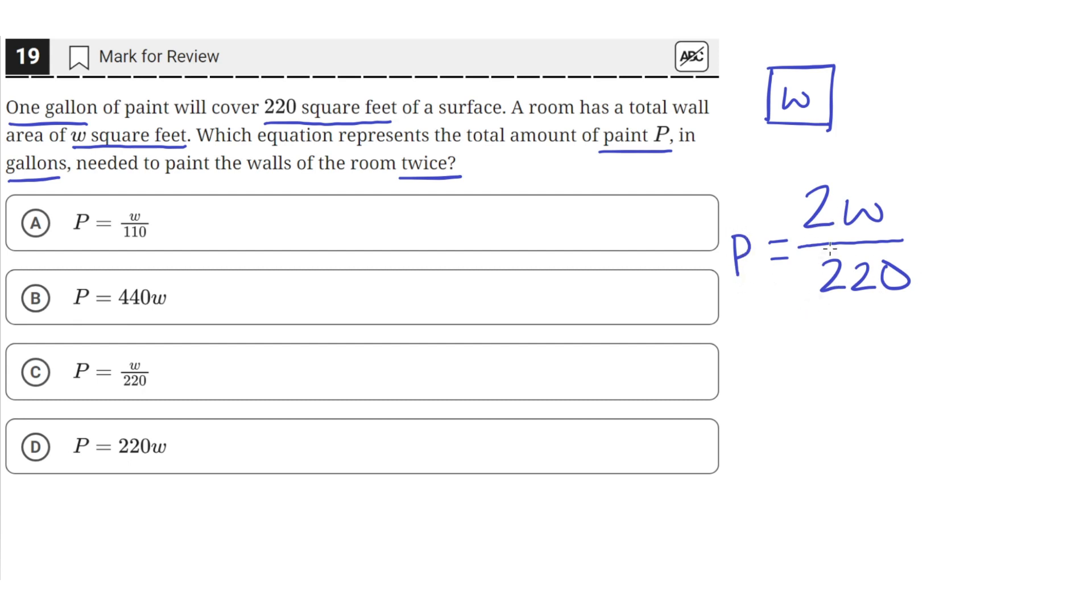So we can just simplify this down. So 2 divided by 220 can be simplified to 1 over 110. So P equals W over 110, which is answer choice A.